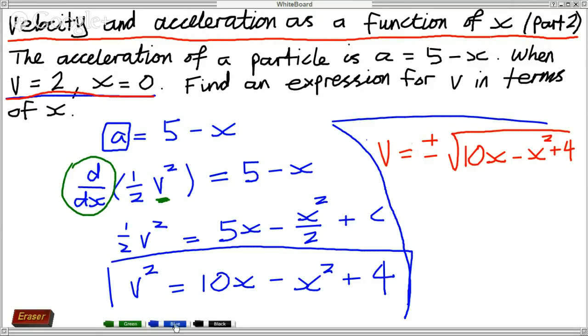...when x is 0, v is 2, that means that we're only going to be using the positive square root. So v equals the square root of 10x minus x squared plus 4 because the negative answers are inapplicable when x is 0, v is 2 so it's going to be the positive square root.